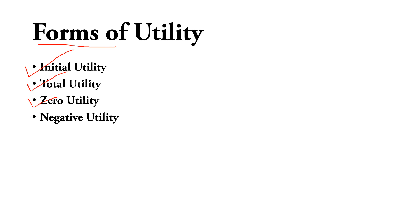The last form is negative utility. Taking the same wedding example — if your stomach is already full and you eat something you should not have eaten, your stomach becomes upset. That is called negative utility. So please remember the different forms of utility: initial utility, total utility, zero utility, and negative utility. Please understand these concepts, as you may receive exam questions on this.